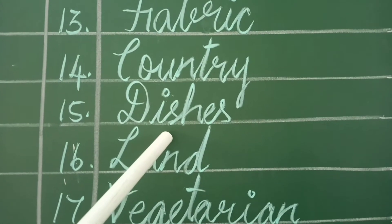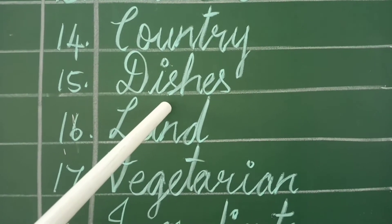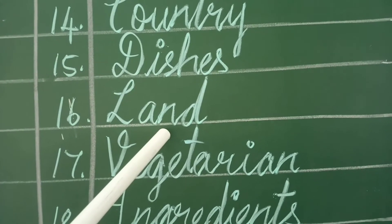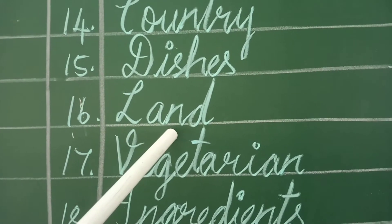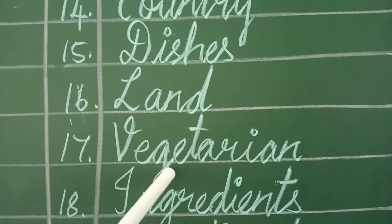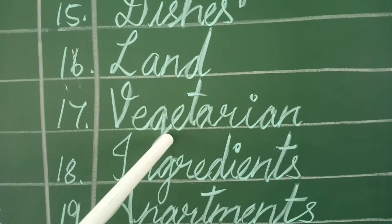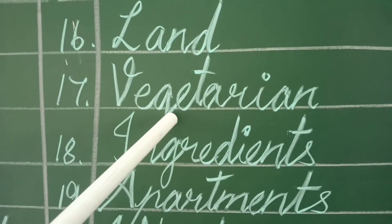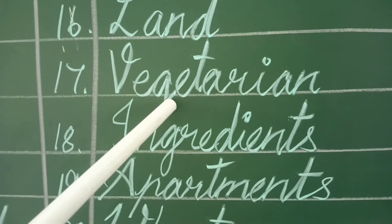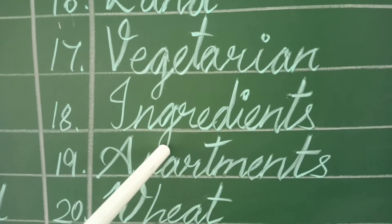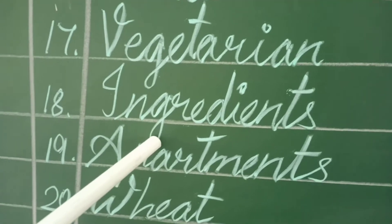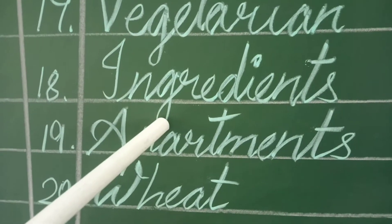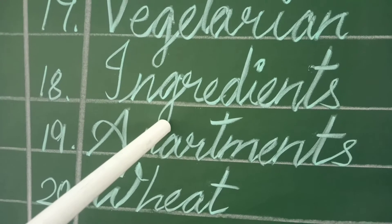Dishes — it means a particular variety of food. Unabuvel. Land — it means the part of the earth's surface. Nilam. Vegetarian — it means a person who does not eat meat or fish. Pulaal unnaadavarkal. Ingredients — it means any of the foods or substances that are combined to make a particular dish. Tevayana purulukkal.